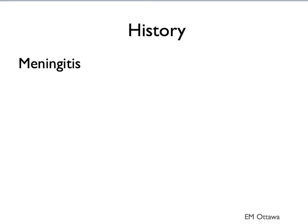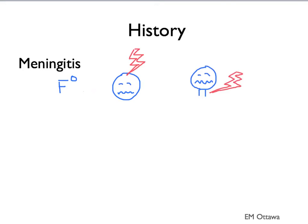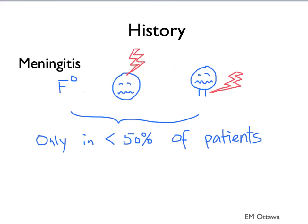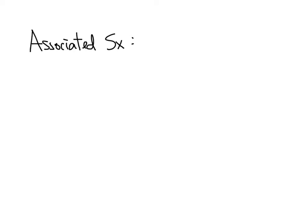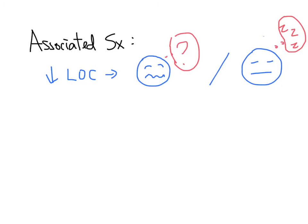Moving on to presentation — in terms of history, patients with meningitis may complain of fever, headache, and neck stiffness or pain. However, less than 50% of patients have this classic triad, particularly if it is early. Associated symptoms include decreased level of consciousness, such as confusion or lethargy, as well as nausea, vomiting, and photophobia.